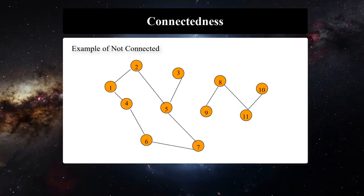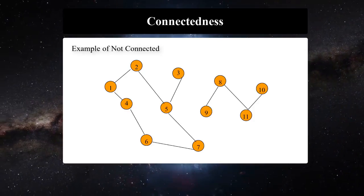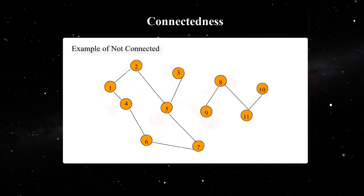Here is an example of a not connected graph. How can you make it connected? Yes, by adding an edge between 5 and 9 you can make the graph connected.